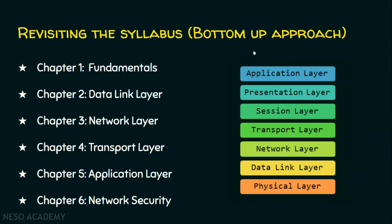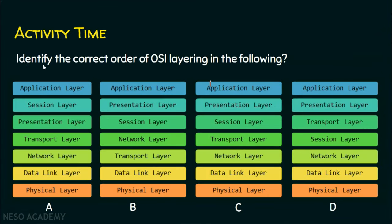Now there is an activity for you. You are required to identify the correct order of the OSI layers from four given options: A, B, C, and D. Use the shortcut I provided to remember the layers, and you can easily identify the correct one. Pause this video and post your answer in the comment section.